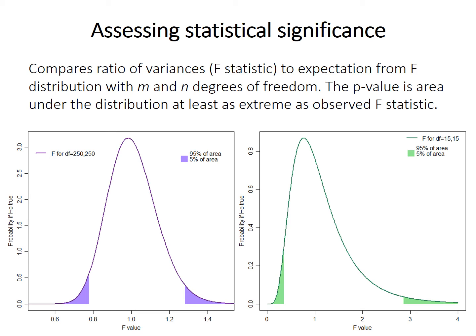This F-distribution curve gives the expected probabilities for the F-statistic if the null hypothesis is true. We want to know what is the probability of finding a value more extreme than our F-statistic if the null hypothesis is true. The p-value is just the area under the distribution for F-statistics at least as extreme as the one you observed.